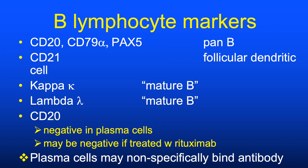For B-cell proliferations with plasma cells or plasmacytic differentiation, kappa and lambda immunostains can determine light chain restriction—a marker of clonality and a hallmark of malignancy. This is one of the rare examples where immunostains can establish a diagnosis of lymphoma. In DermPath, this is most commonly applied in primary cutaneous marginal zone B-cell lymphoma. Note that CD20 may be negative in fully differentiated plasma cells or if the patient has been treated with rituximab.